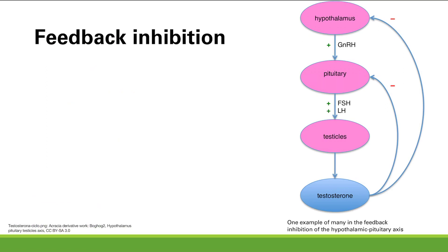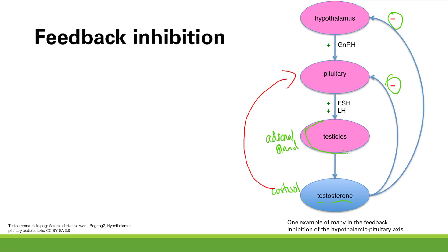Now let's talk about feedback inhibition — also very high yield. The hormone released from a peripheral gland feeds back to inhibit the hypothalamus and pituitary. For example, testosterone from the testes inhibits hypothalamic and pituitary secretion, decreasing further production of itself. This feedback inhibition occurs for essentially every hormone stimulated by the anterior pituitary. The same applies to the adrenal gland.